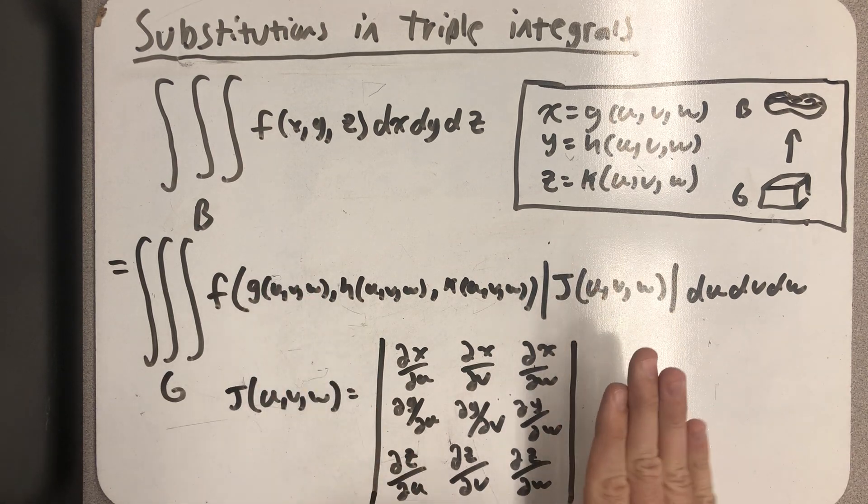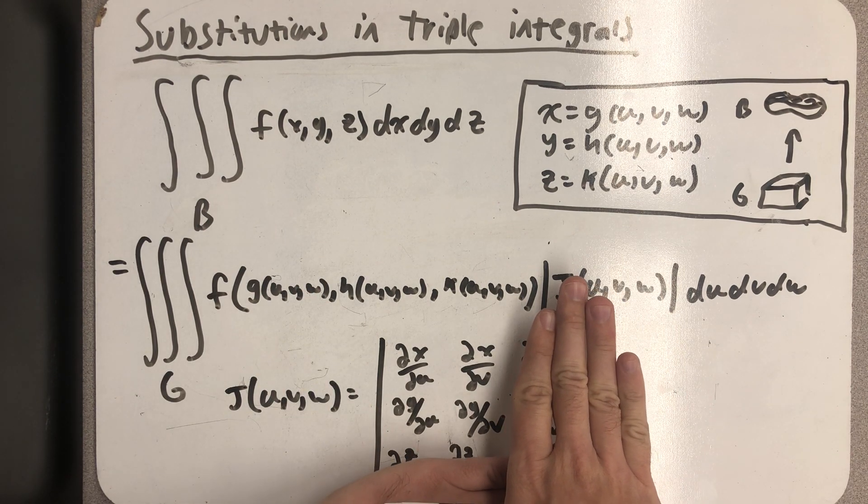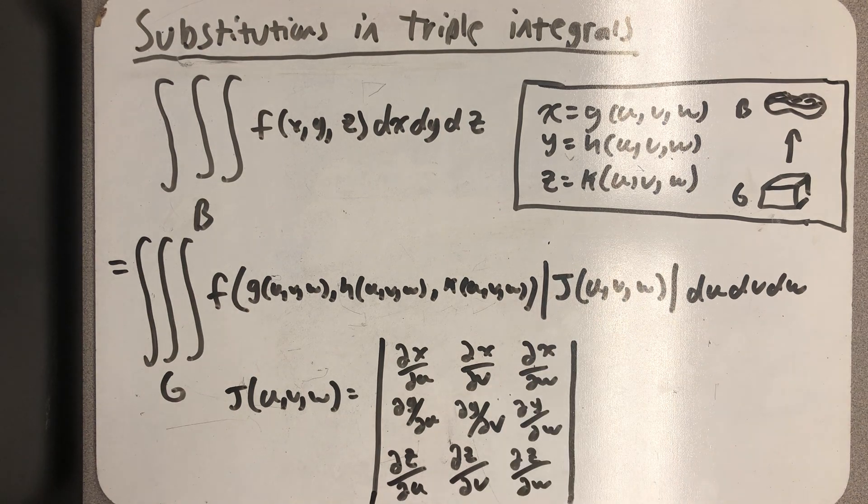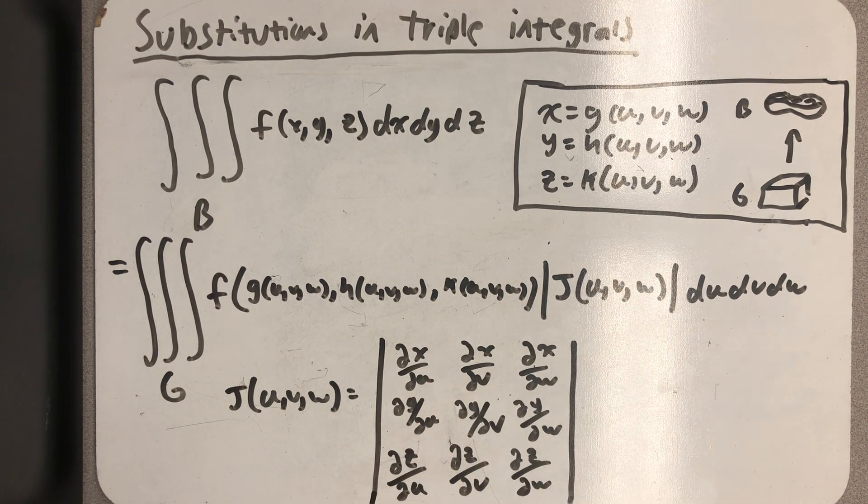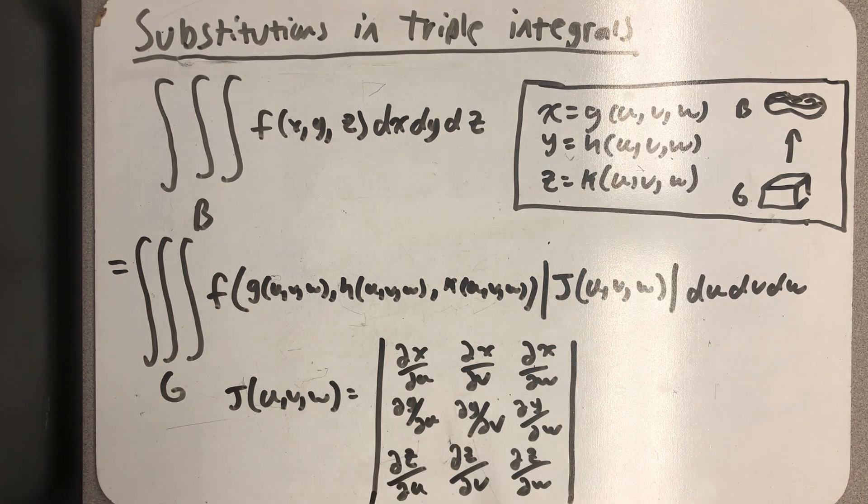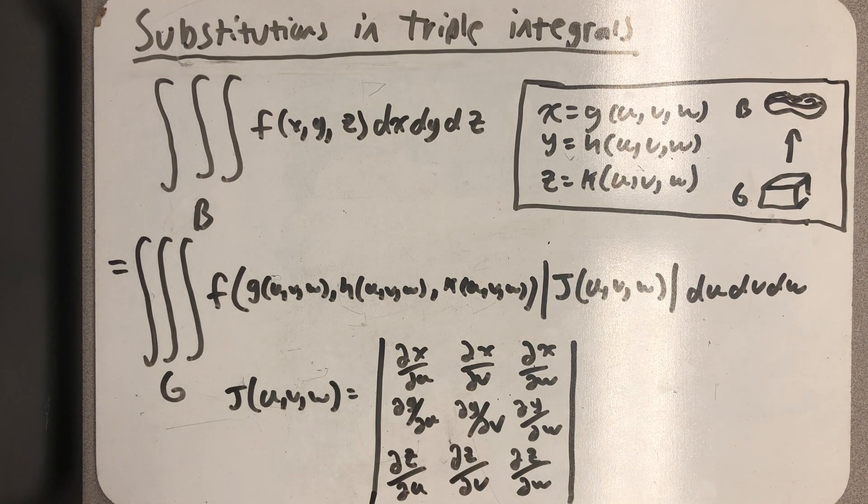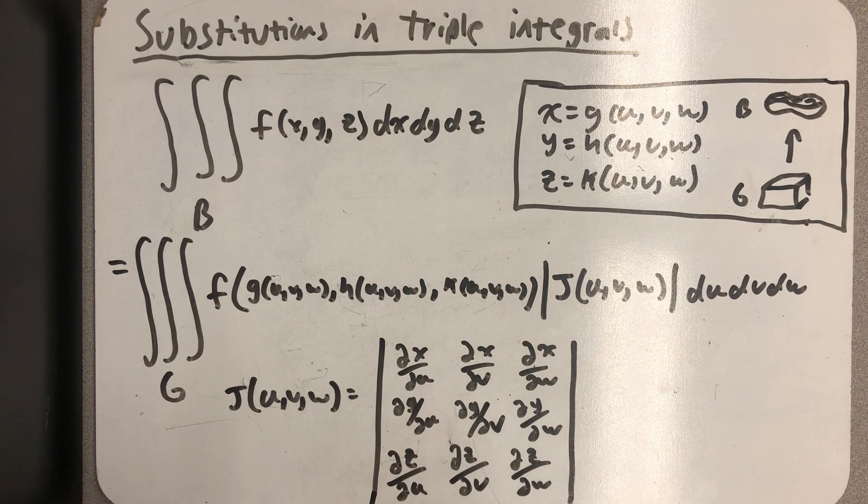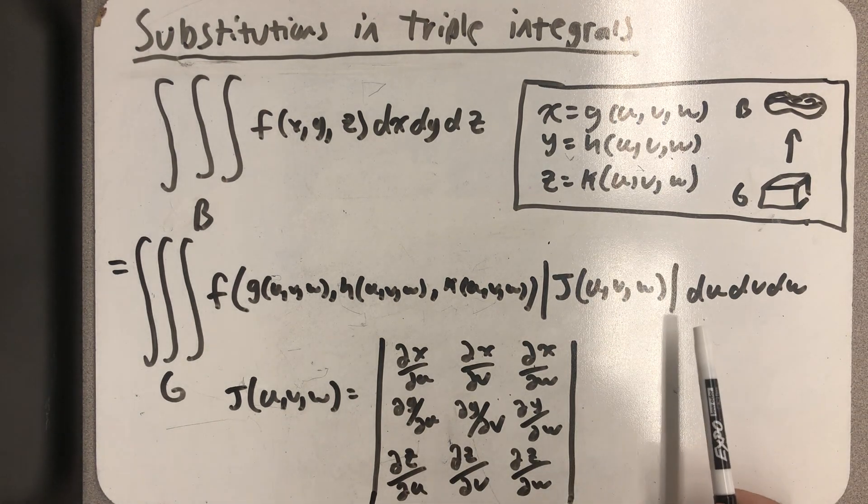And then I have times the absolute value of a Jacobian. So here's my Jacobian, which looks just like the Jacobian for two variables. I just need to have one more partial and one more row. So a column for a partial with respect to w and the extra row for the z's. And then my new variables.